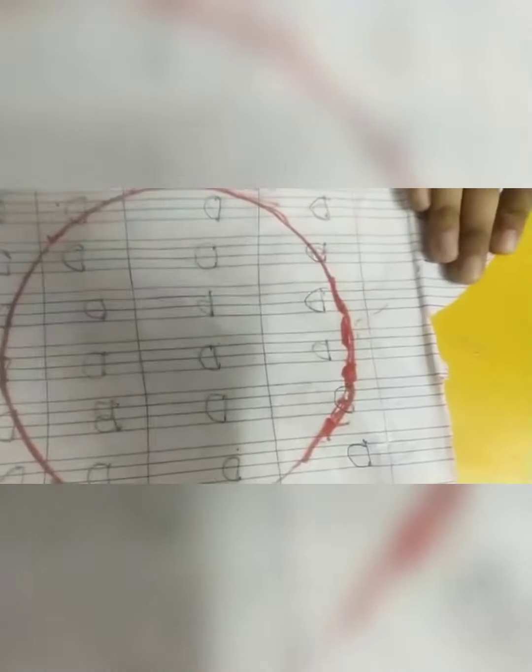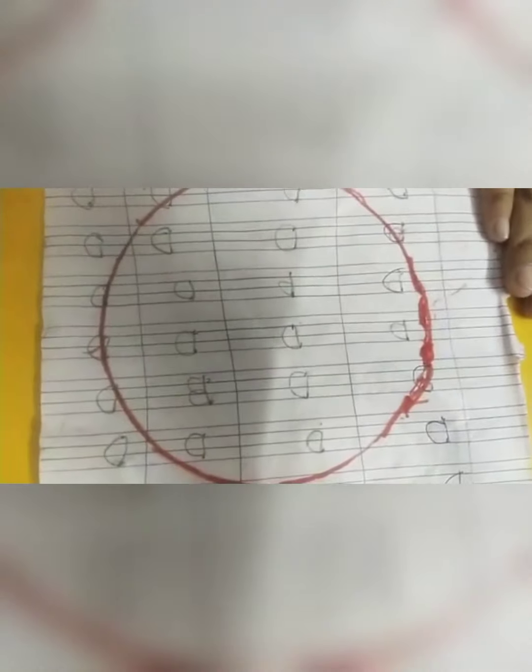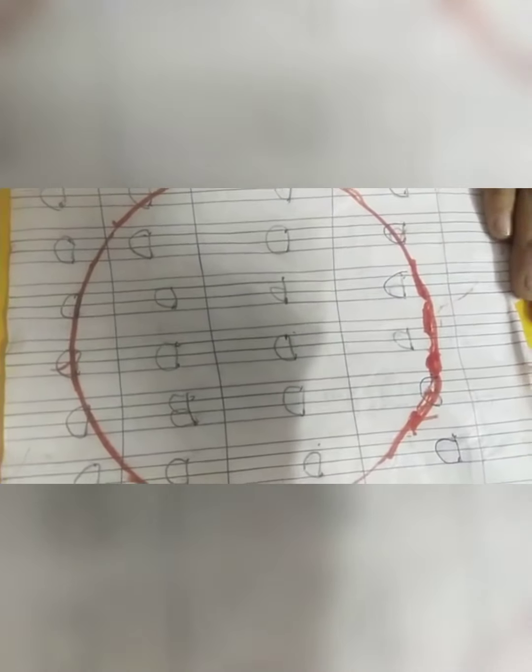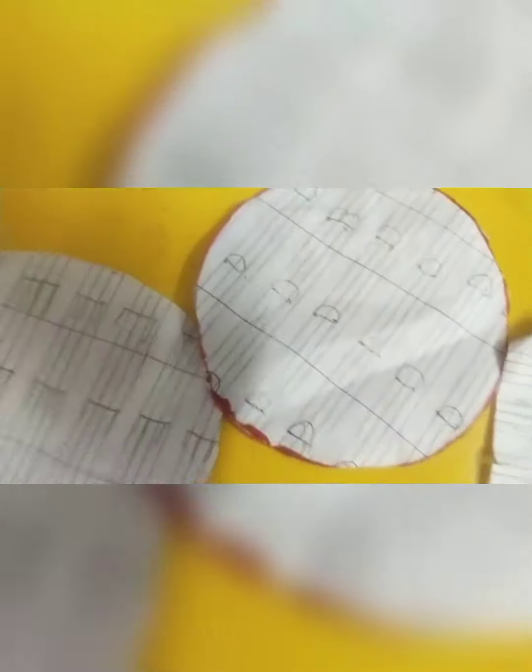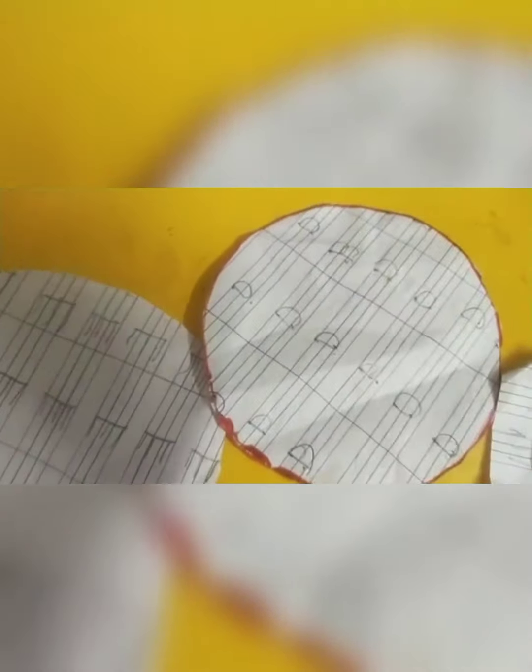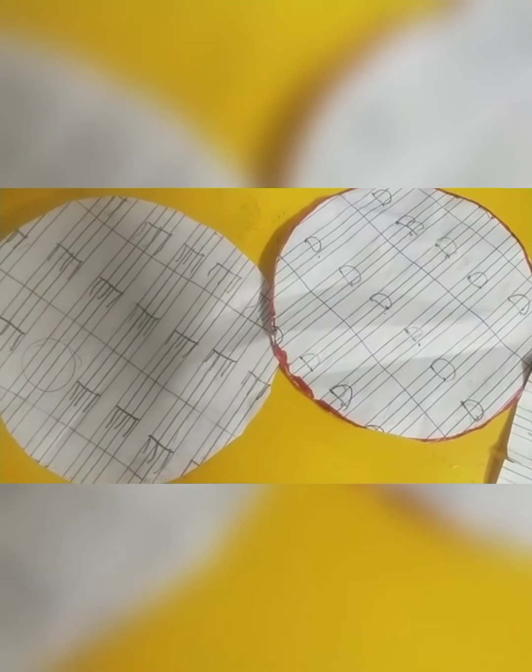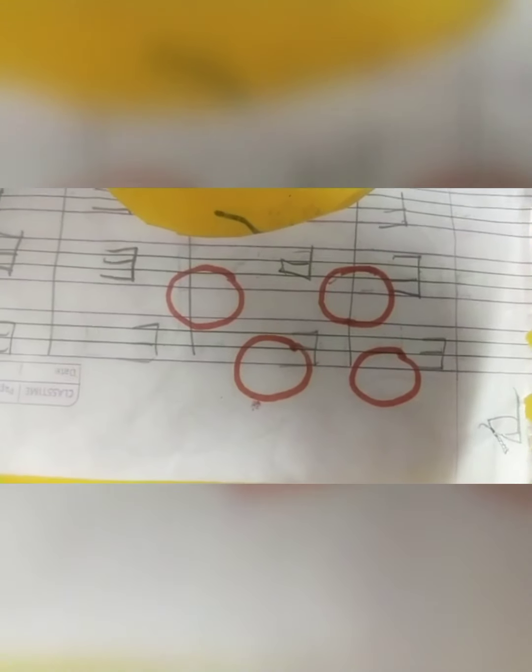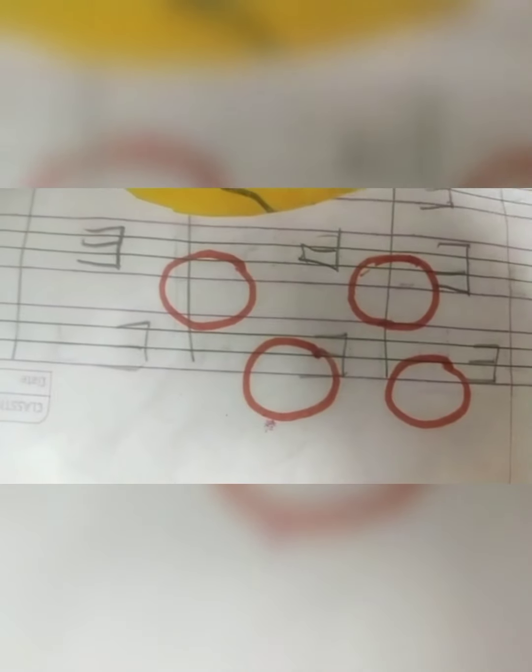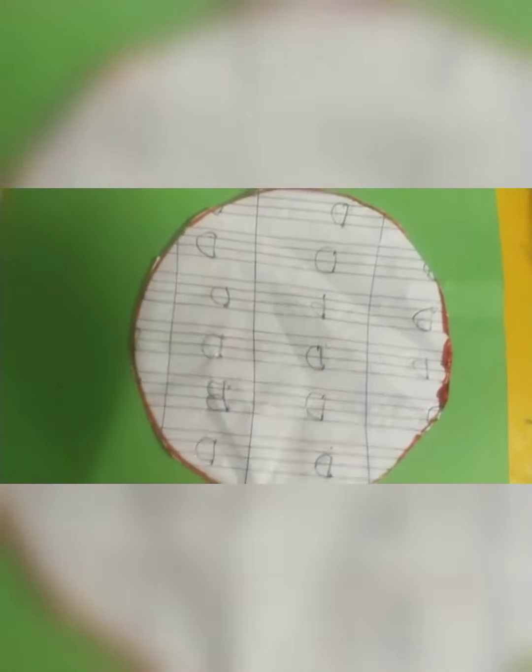Now we have drawn the round circle on the paper, we will cut it with scissors. Now we have two round circles, we have cut the round circles.